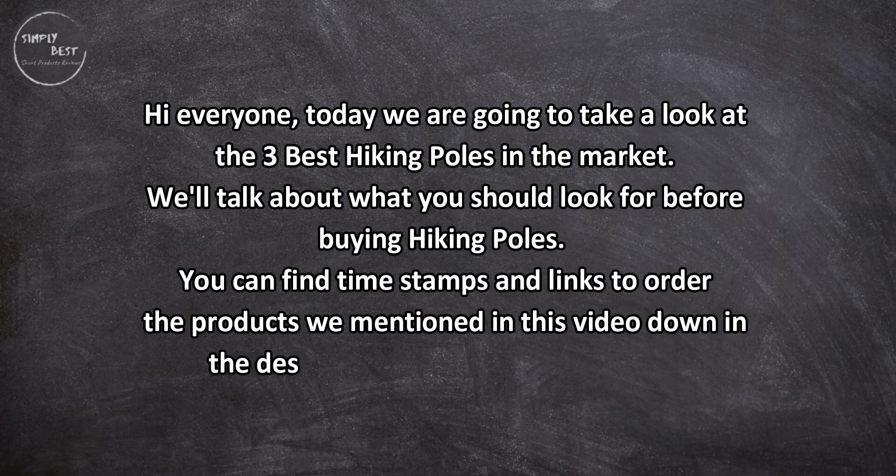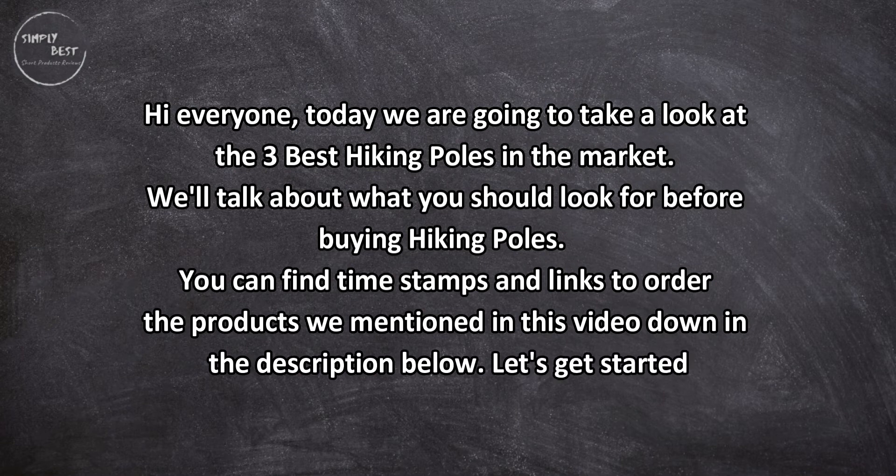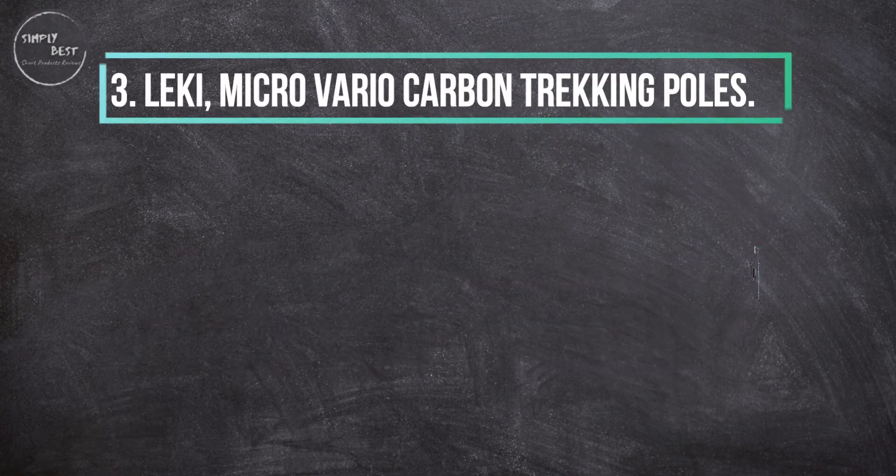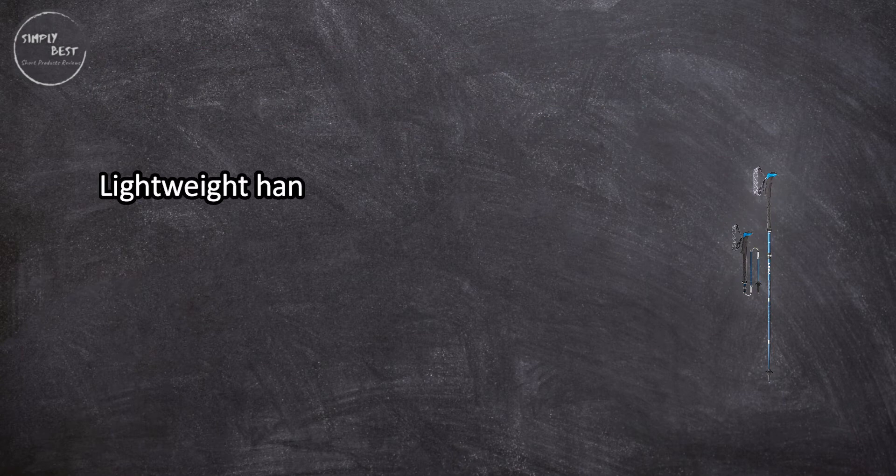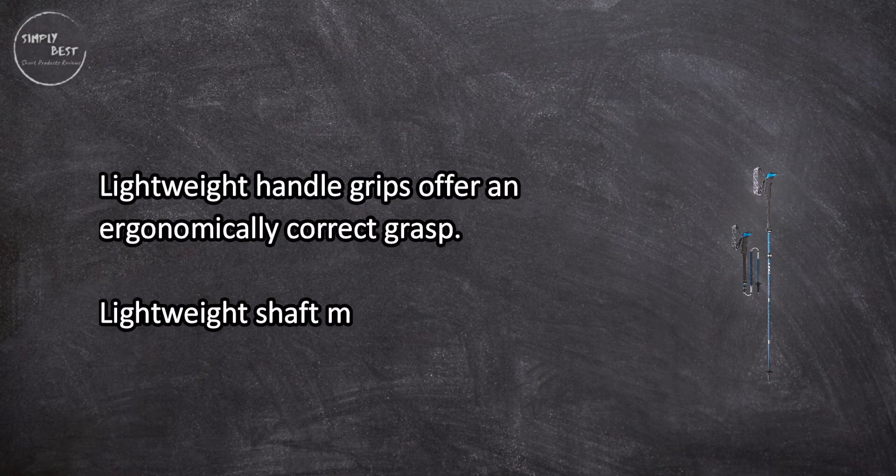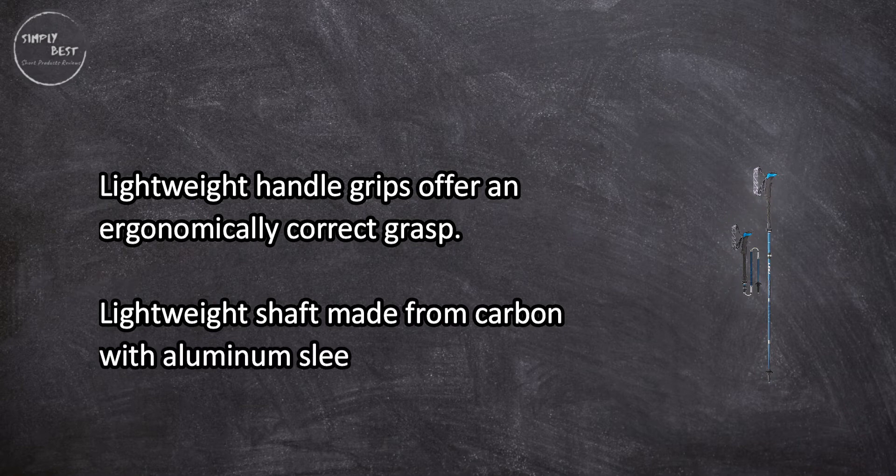Let's get started. At number three: Lecky Micro Vario Carbon Trekking Poles. Lightweight handle grips offer an ergonomically correct grasp. Lightweight shaft made from carbon with aluminum sleeves.